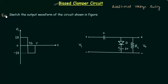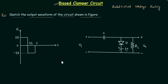In this example, we have to sketch the output waveform of the circuit shown in the figure. This is a biased clamper circuit because we have an additional DC voltage source in this circuit. Because of this DC voltage source equal to 2V, we will have additional voltage swing in the output waveform. Vi is the input voltage and Vo is the output voltage.